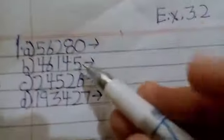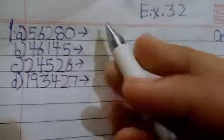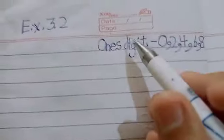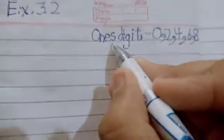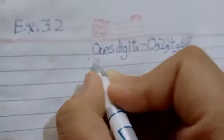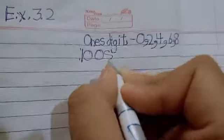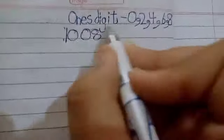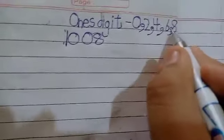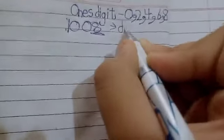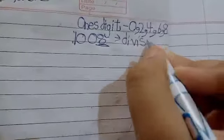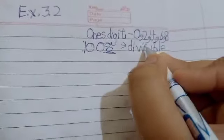First we are going to do the first question — we are going to check which numbers are divisible by 2. To check divisibility by 2, the rule is: the last digit should be 0, 2, 4, 6, or 8. For example, 1008 — the last digit is 8, so it is divisible. I will say yes. If not, I will say not divisible.